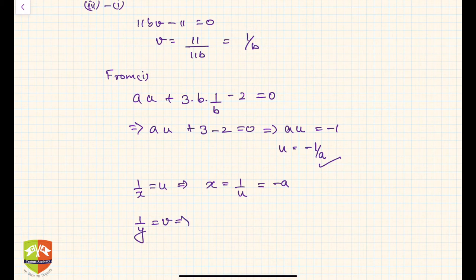Similarly, 1 by y was v. This implies y is equal to 1 upon v, and v was 1 upon b, so hence it is simply b.